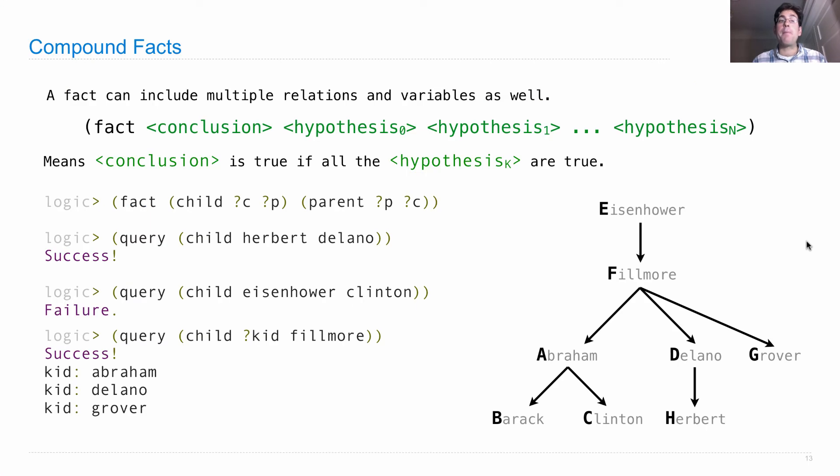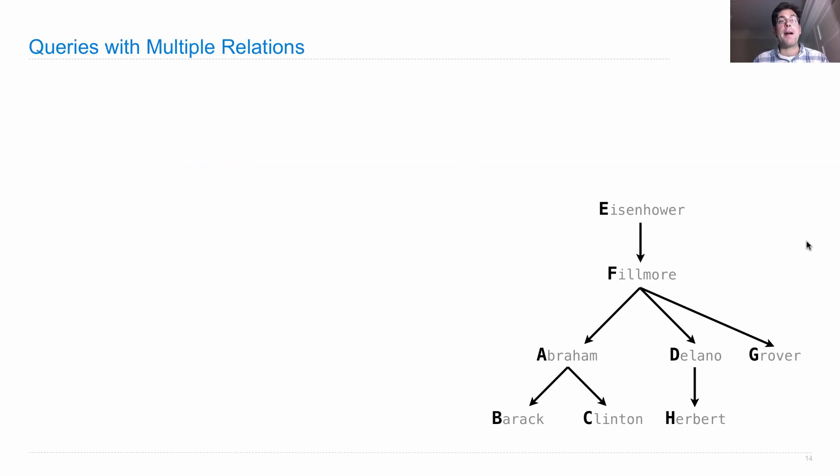Those are compound facts. We can also have compound queries. A query can have multiple relations, and an assignment must satisfy all relations at the same time. I can write query with a bunch of relations in a row. It's satisfied if all the relations are true.